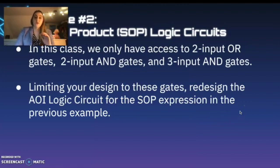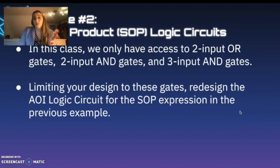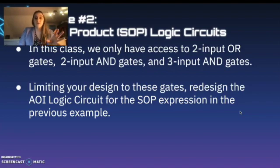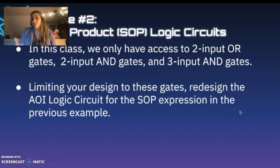In this class, we only have access to two-input gates — two-input OR gates and two-input AND gates, or three-input AND gates. Most of the design problems you'll be facing only allow two-input gates, so we have to limit our design accordingly. That means we have to do something called cascading, where we take our minterms and break them into pieces to create the final output.